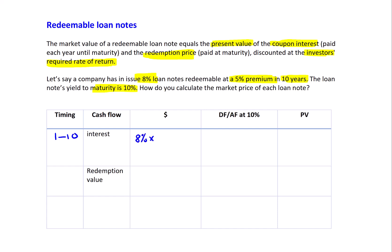So 8% times 100 means we'll be getting $8 interest per annum. The redemption value comes in at year 10, and I've already said that is 105 because it's 100 times by 1.05 because of the 5% premium, which equals 105.